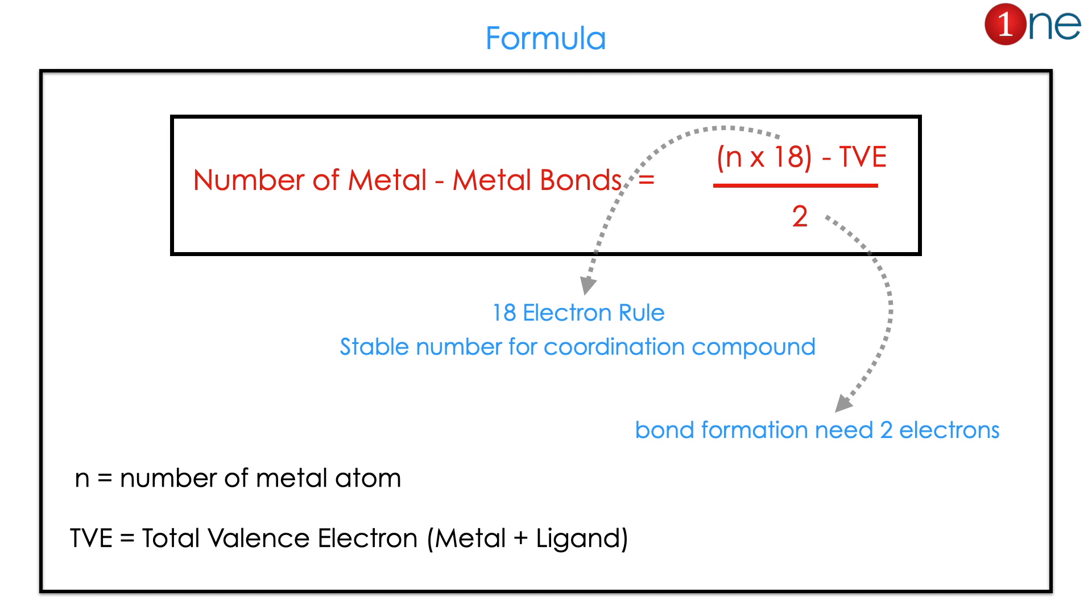What is the formula for counting the number of metal-metal bonds? n multiplied by 18, minus total valence electrons, divided by 2.